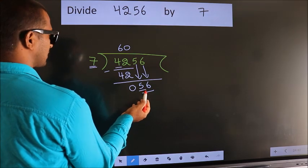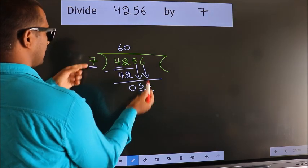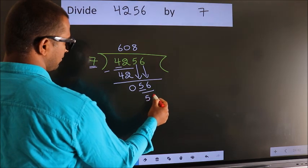When do we get 56? In the 7 table: 7 times 8 equals 56.